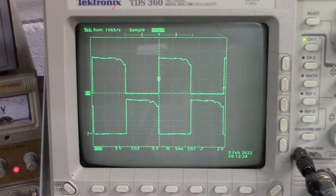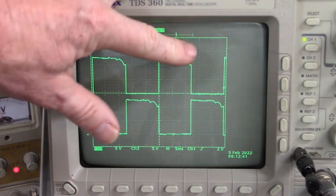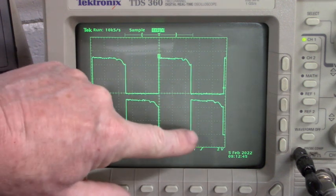Now look at this. Phase A and phase B are 180 degrees apart. So when phase A is high, phase B is low.